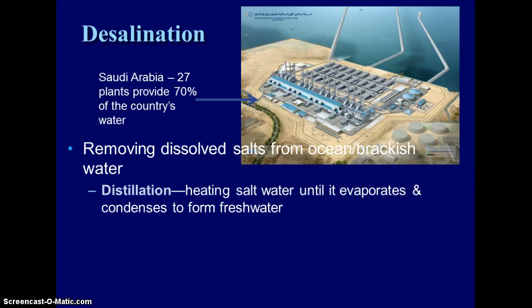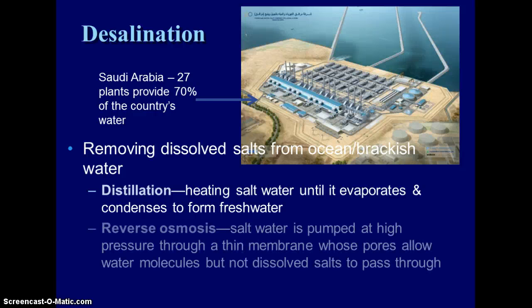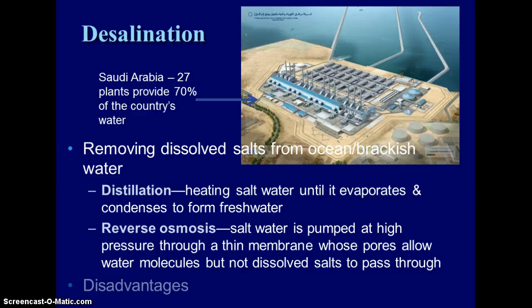There are several different ways to desalinate water. Distillation involves heating water to a high enough temperature so the water evaporates, the salt is left behind, and the evaporated water is condensed into fresh water. Reverse osmosis pumps water through a filter or membrane that allows water molecules through, but dissolved salts are too large to pass. The disadvantages are that it is very expensive, and you also produce waste water — a brine of very salty water and leftover minerals — that you have to find ways to dispose of.